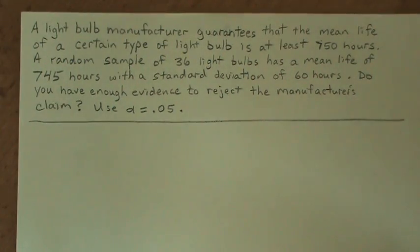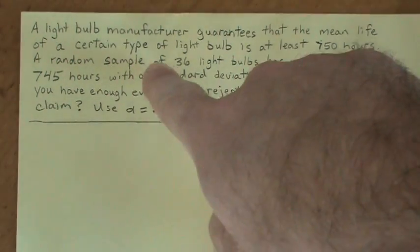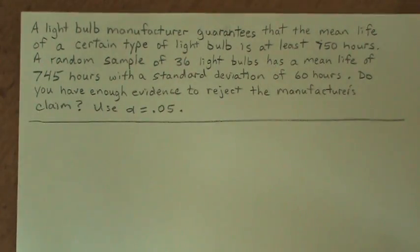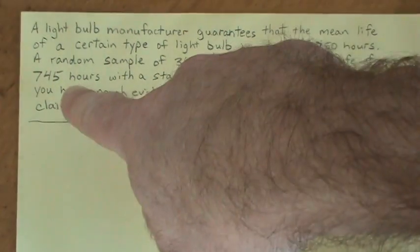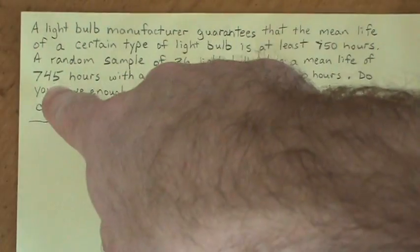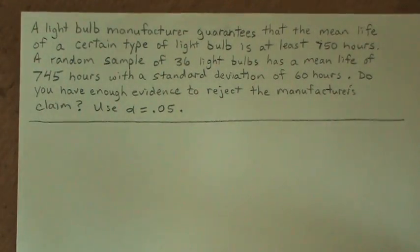So somebody maybe didn't believe them, so they went and took a random sample of 36 of these light bulbs and they tested them. And they found that the average life, the mean life, of these 36 light bulbs was 745 hours with a standard deviation of 60 hours.